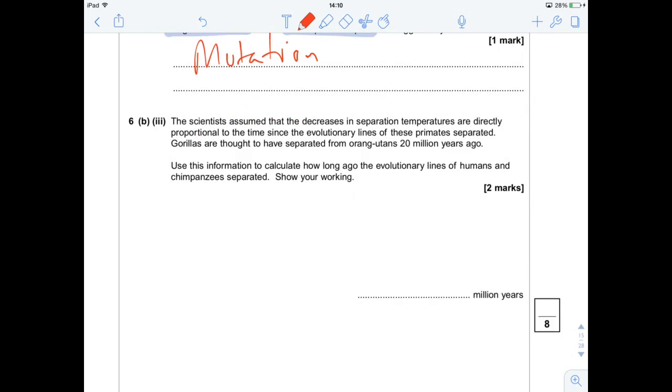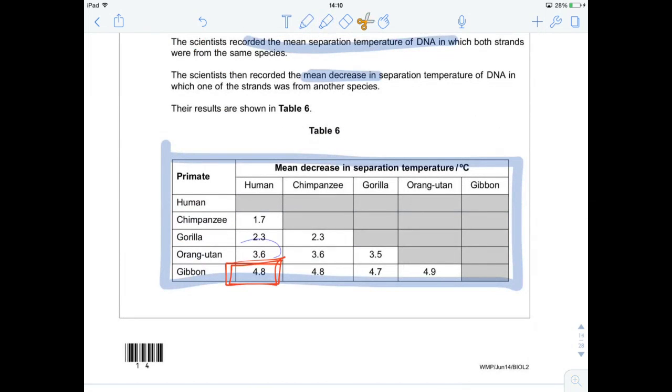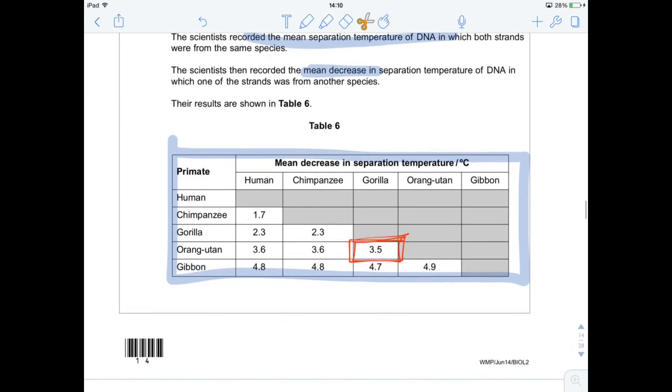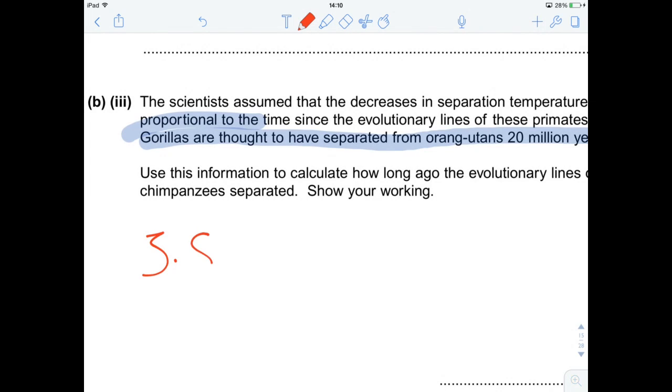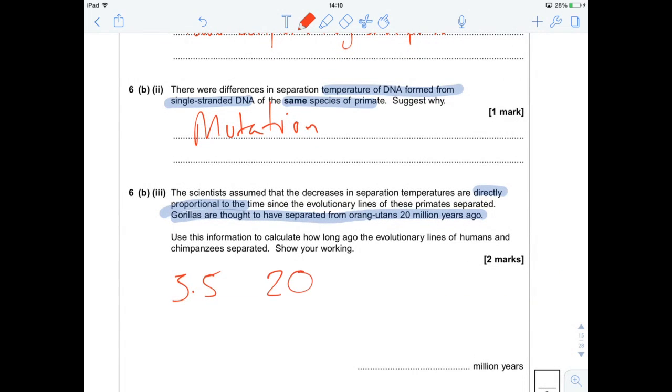Question 6b, part 3. We've got a calculation to do by the looks. The scientists assume that the decreases in separation temperatures are directly proportional to the time since the evolutionary lines of these primates separated. Gorillas are thought to have separated from orangutans 20 million years ago. So, gorillas and orangutans. Let's go back to the table. Gorillas and orangutans. So, 3.5. All it basically wants us to do is take that information. 3.5, that's 20 million years ago.